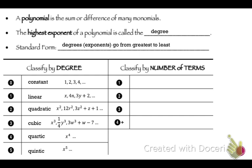Classifying by number of terms: if it has one term, it's a monomial. Two terms is a binomial — bi means 2. Three terms is a trinomial — tri means 3. More than that, we just call it a polynomial, and poly means many.